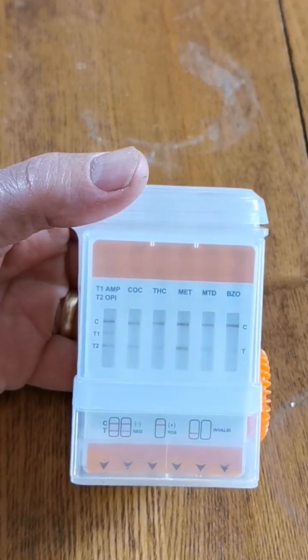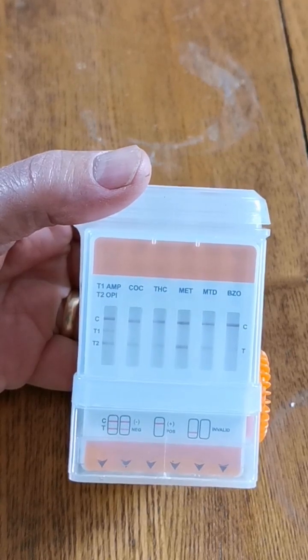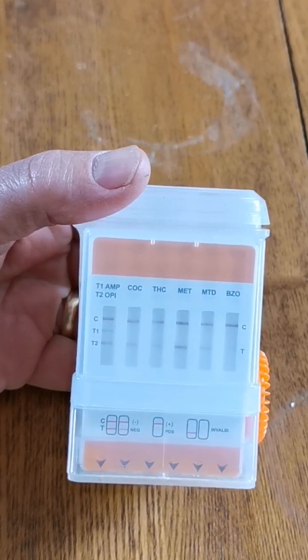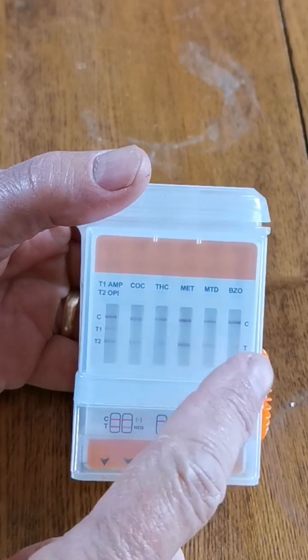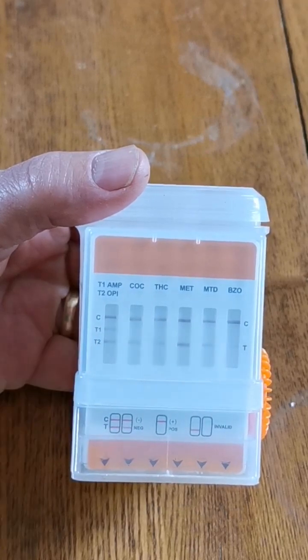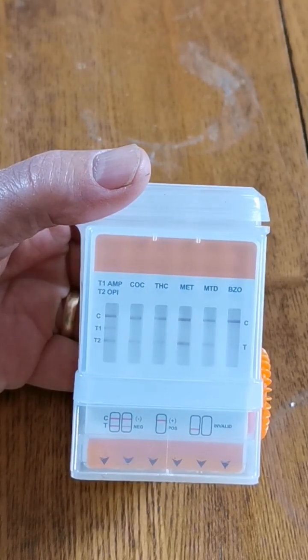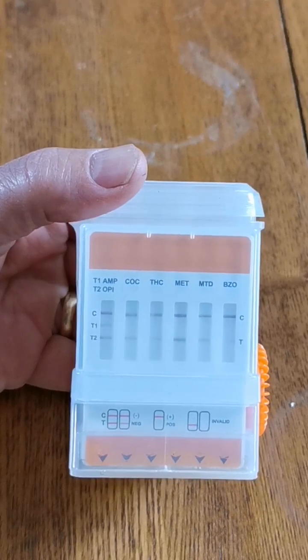On the other five columns we've only got a single T line or test line, so these are individual drug group results. You'll see test lines showing for all the T1 T2 areas, indicating this is a clear negative result.